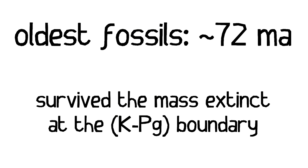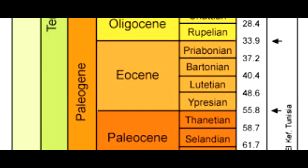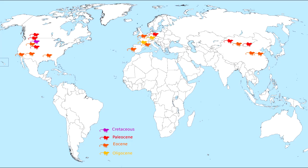The oldest fossils of the Nyctytheriidae are 72 million years old, so they already existed in the late Cretaceous and survived the mass extinction at the Cretaceous-Paleocene boundary. There is one genus, Paranyctoides, which existed from 94 to 66 million years ago — it's possibly an ancestor of other nyctytheriids rather than a nyctytherid itself, so it will be ignored in the further presentation. The youngest fossils of this family are around 28 to 23 million years old, marking the end of the Oligocene. Most nyctytheriids lived during the Paleocene and Eocene, between 60 and 30 million years ago, and a distribution map has been created showing fossil locations color-coded by geological epoch.